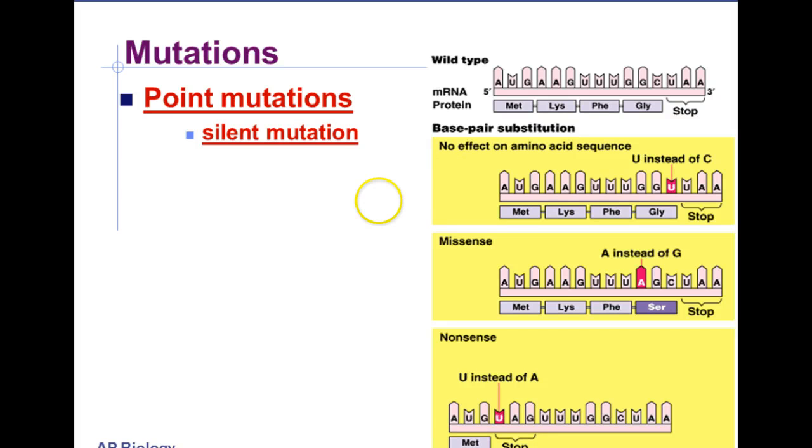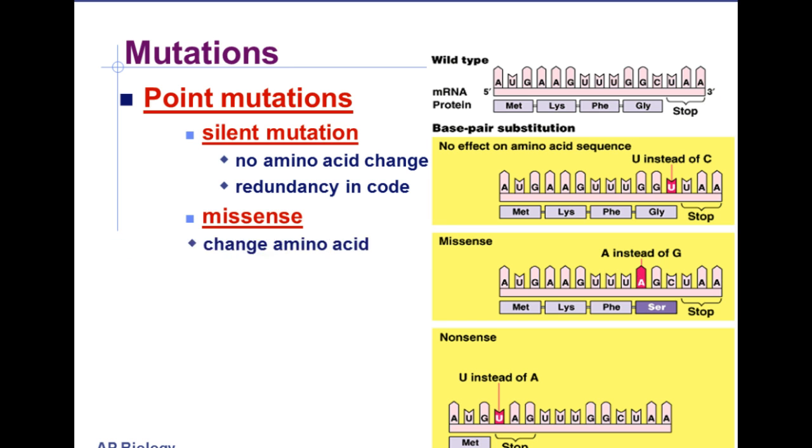Next are missense mutations. In a missense, a base pair substitution mistake happens and results in a change in the actual amino acid. That then results in a change in the protein. And then the last is called a nonsense mutation. In a nonsense mutation, an amino acid is changed to a stop code and interferes in the processing of that protein. So missense, have a change in amino acid, which means it changes the protein and the protein function. A nonsense point mutation is where it changes the amino acid sequence to a stop code, and that stops the production of that protein.